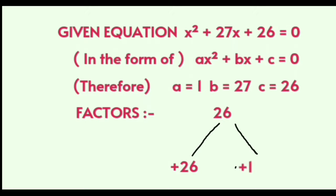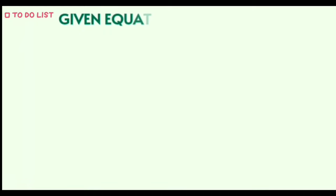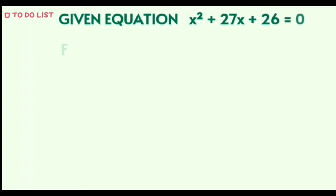After finding the factors of the c term, which is 26, the first step is to write the factors of the c term in the place of the b term — that is, 27x — along with the signs. The given equation x squared plus 27x plus 26 is equal to 0 then becomes...